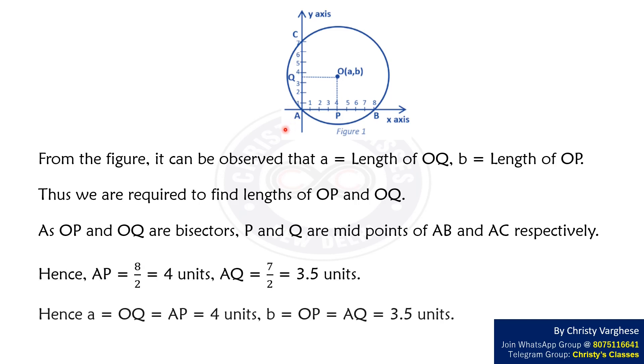Hence, a equals OQ equals AP equals 4 units and b equals OP equals AQ equals 3.5 units. Thus, the coordinates of the center of the circle O equals (4, 3.5).